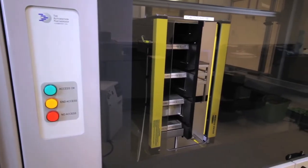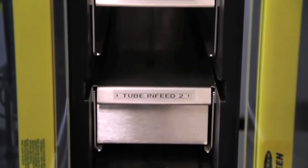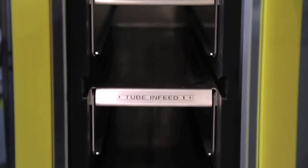This tube loading unit provides access to place and transfer the racks of tubes, with a total capacity of 12 racks, containing 96 tubes each at a time.